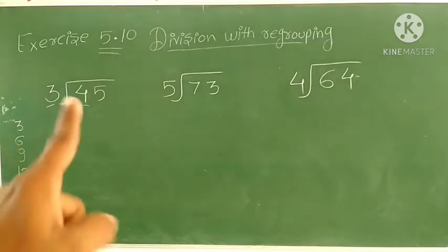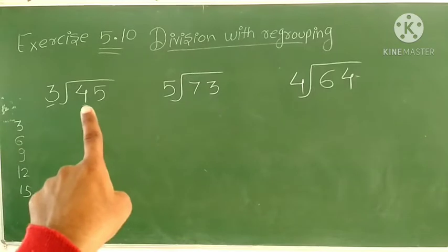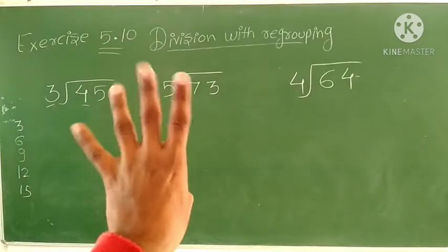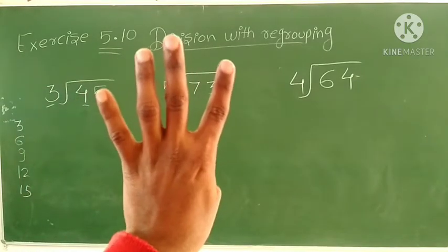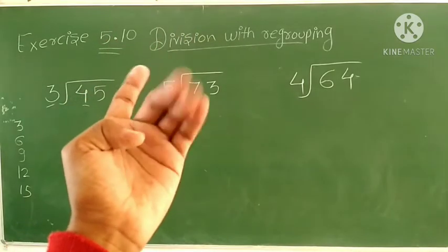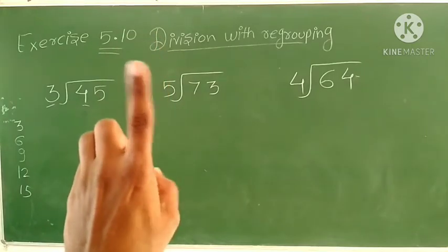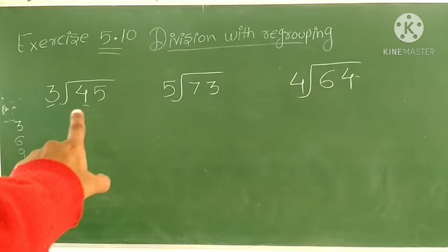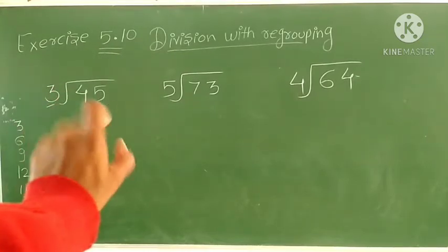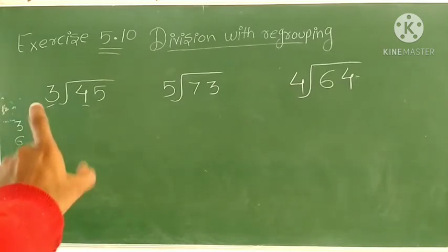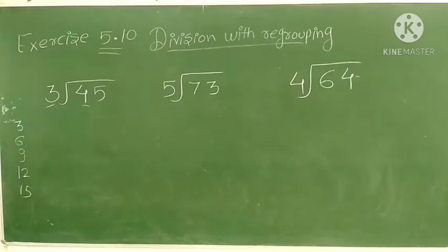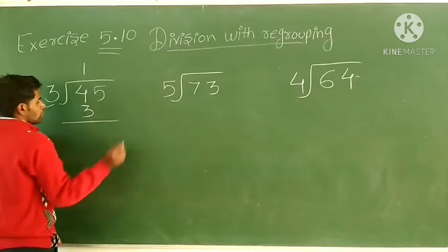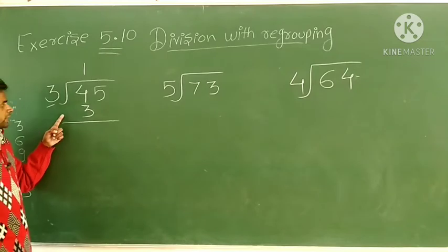Now we have to divide 4 by 3. We have 4 things and we need to make groups of 3. We look for a number in the table of 3 that is less than or equal to 4. The number 4 is not in the table of 3, so we take 3 — because 3 twos are 6, which would be greater than 4 and we cannot subtract it.